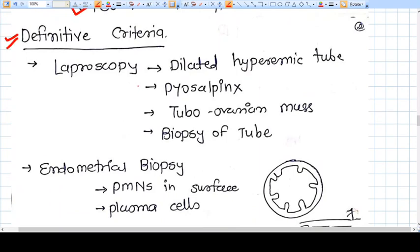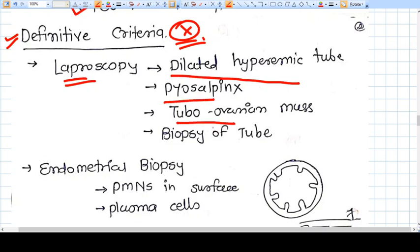But again, this is not very important—you don't do a laparoscopy to diagnose PID basically. In laparoscopy, you will see dilated hyperemic tube, pyosalpinx, tubo-ovarian mass, and biopsy of the tube. You can see this from ultrasound where you cannot do biopsy, but you can see tubo-ovarian mass or dilated tube.